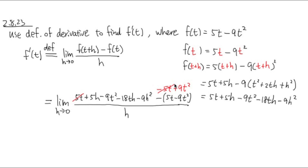Let's see if there's anything that we can do on the top to shorten expressions. 5t and negative 5t can be canceled. Likewise, the negative 9t squared and the positive 9t squared can also be canceled. That's pretty much it. And you see that we have 5h minus 18th minus 9h squared.